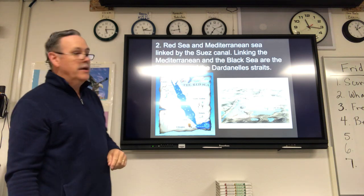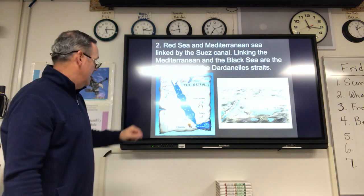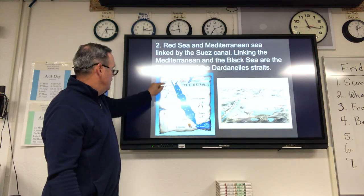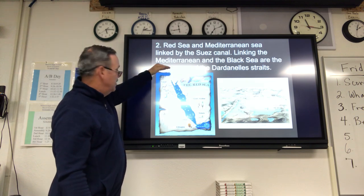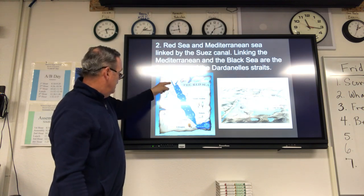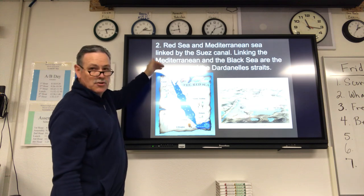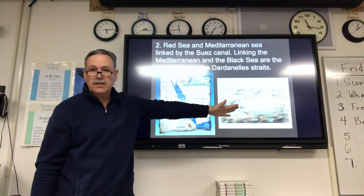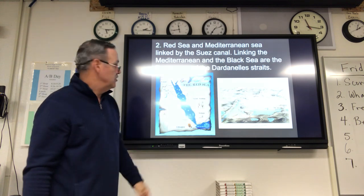The Red Sea and Mediterranean Sea are linked by the Suez Canal — this comes through Egypt. The Mediterranean Sea is to the north, and the canal allows ships to travel from Europe through the canal and on to India and the rest of Asia.